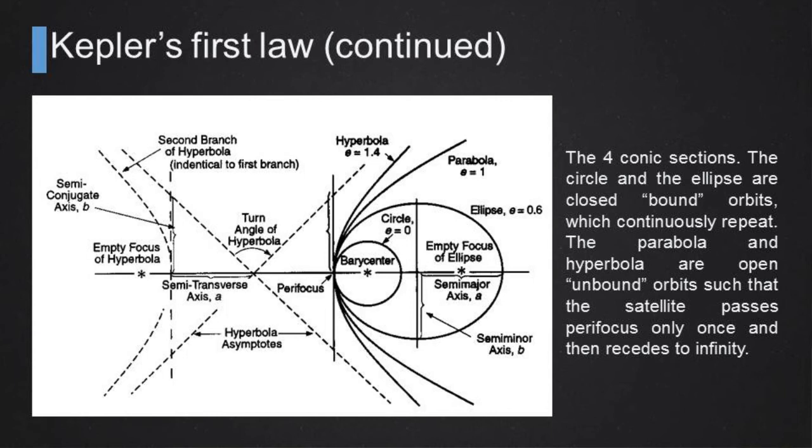The circle and the ellipse are close bound orbits that continuously repeat. Instead, a parabola and a hyperbola are open, so they are trajectories that are traveled only once by the object. They are traveled especially by comets or also by spacecrafts when they travel in interplanetary missions, so they move from one center of gravity to another one.